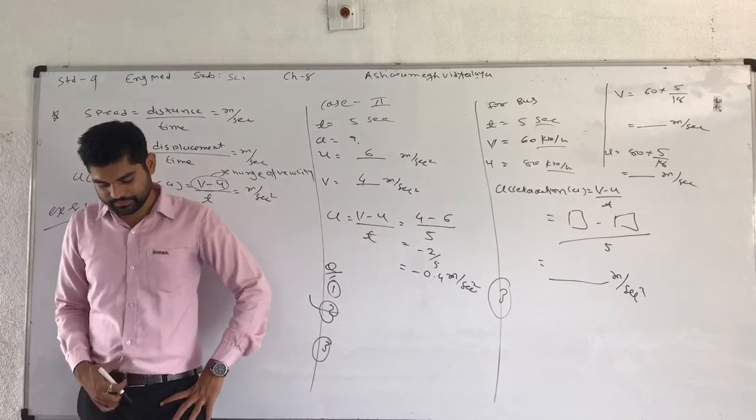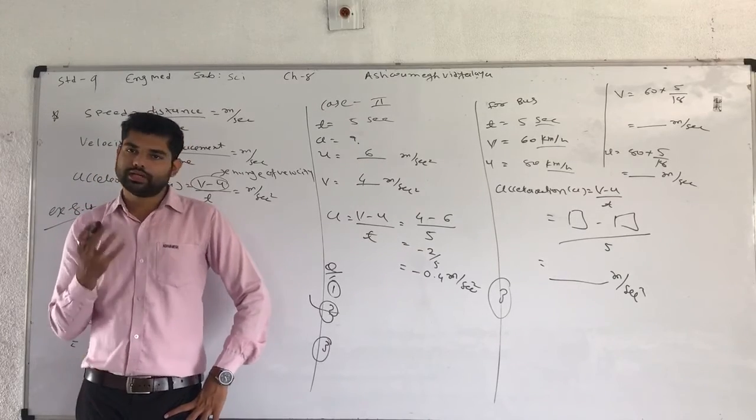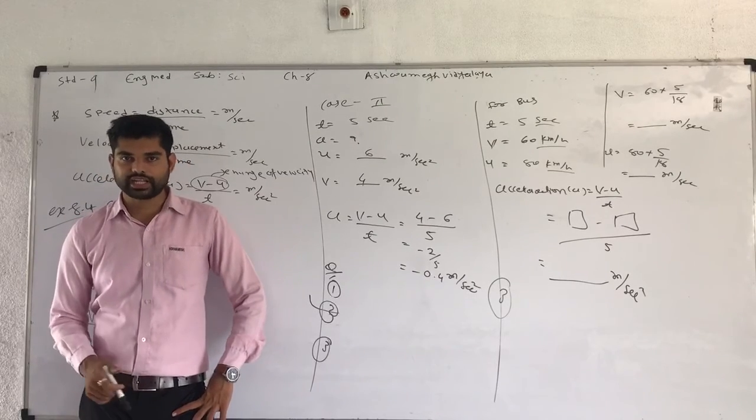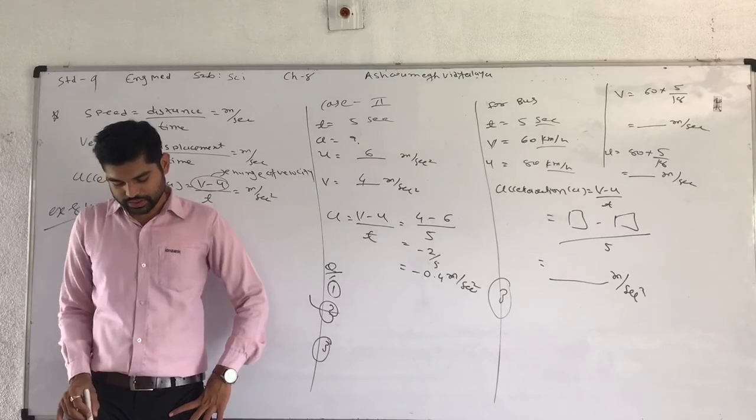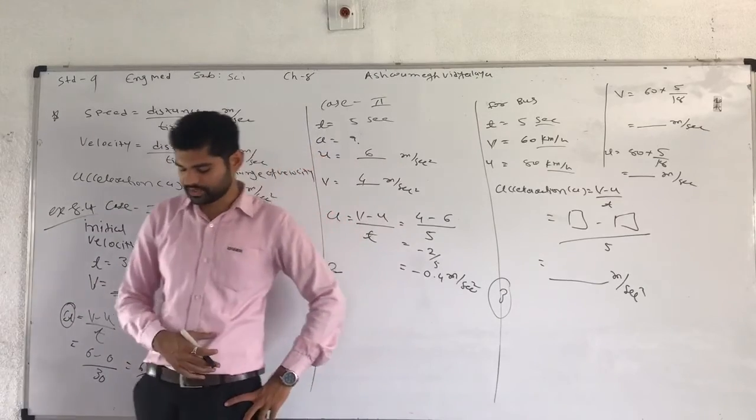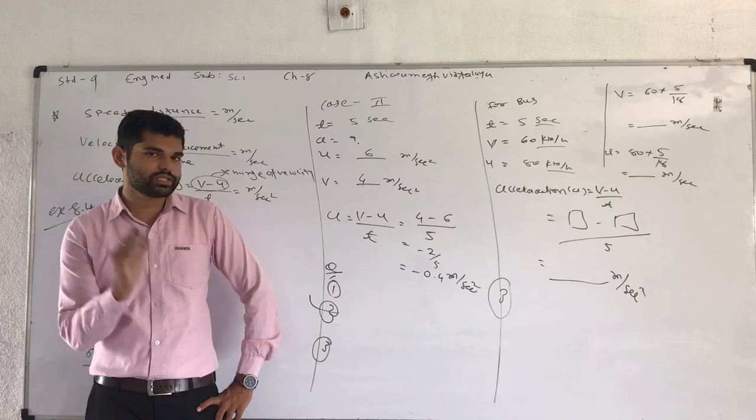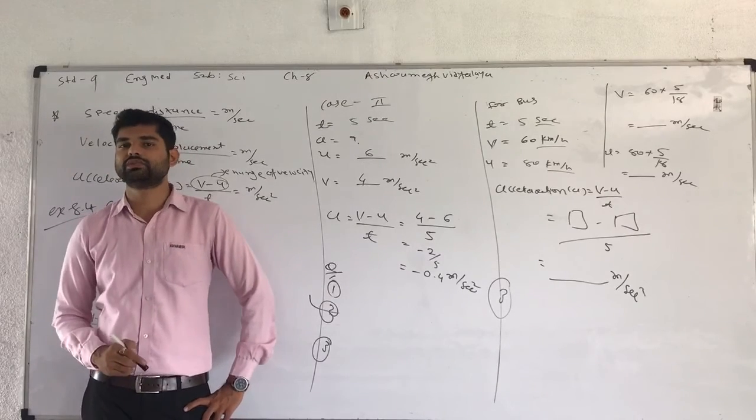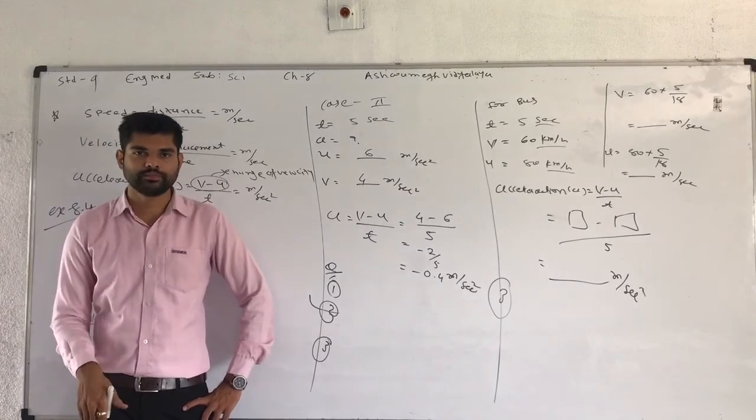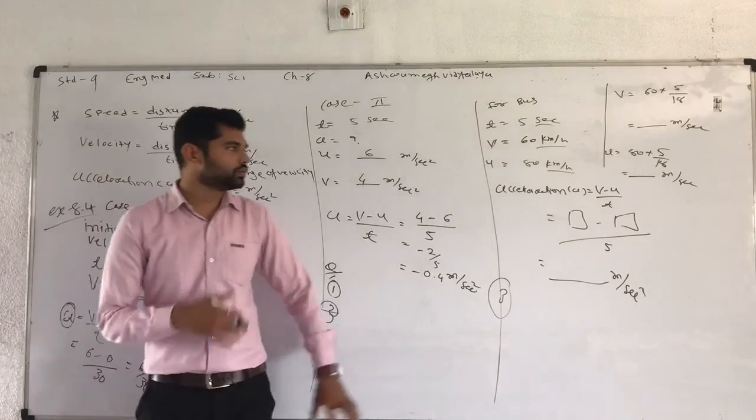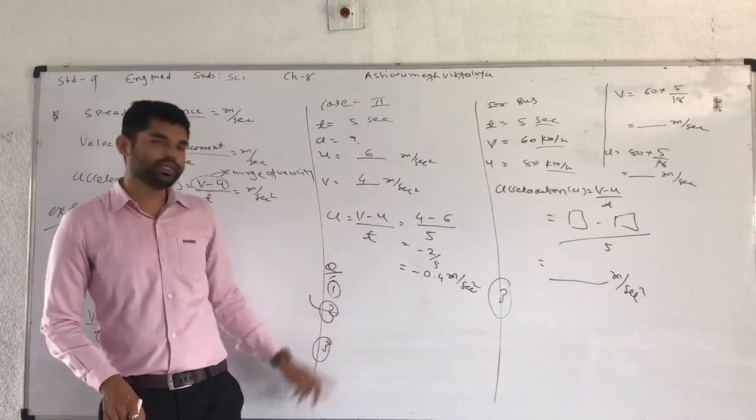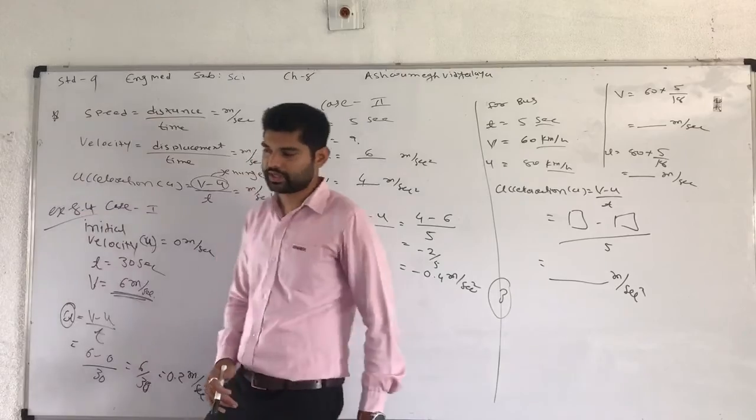In similar way, question number 3 can be solved. Started from rest condition for train. Therefore initial velocity taken 0, U is equal to 0. After started, speed is equal to 40 km per hour reach to speed. And time taken to reach this speed is equal to 10 minutes. So 10 minutes converted into seconds, 1 minute is equal to 60 seconds. Therefore 10 minutes is equal to how many seconds, converted into seconds. And km per hour converted into meter per second by using this concept.